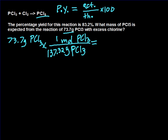So when you do this calculation, you get 0.537, round it up. And now that's moles of PCl3.